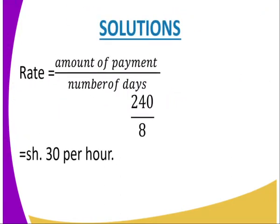The rate will be given by amount of payment over number of hours. The amount of payment is 240 and the number of hours is 8. So you divide 240 by 8, and you get 30 shillings. That means in one hour, the laborer is being paid 30 shillings.